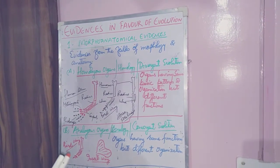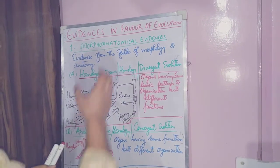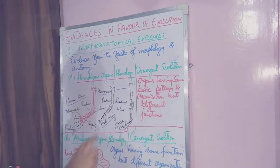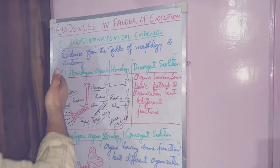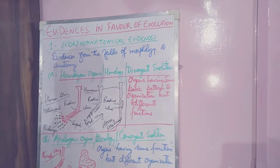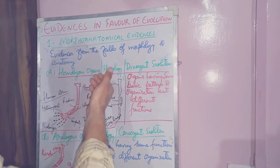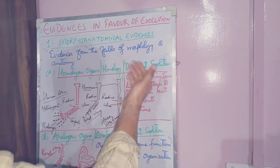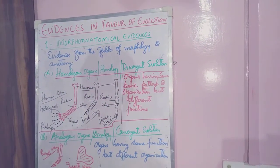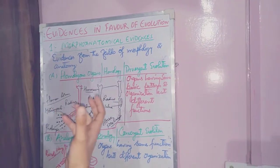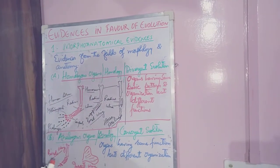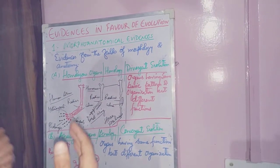The morpho-anatomical evidences are broadly divided into three headings. The first heading is homologous organs and homology, which also includes divergent evolution. Now first of all we will understand what homologous organs are.